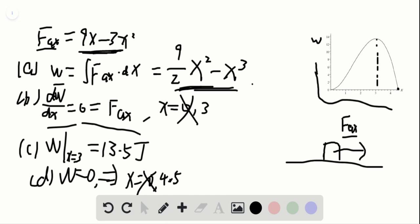And for part E, we want to know at which position the block is at rest. Because initially, the block has no any initial velocity. If we want to find the location where the block is at rest again, it means that the change of the kinetic energy, delta Ek, is zero.